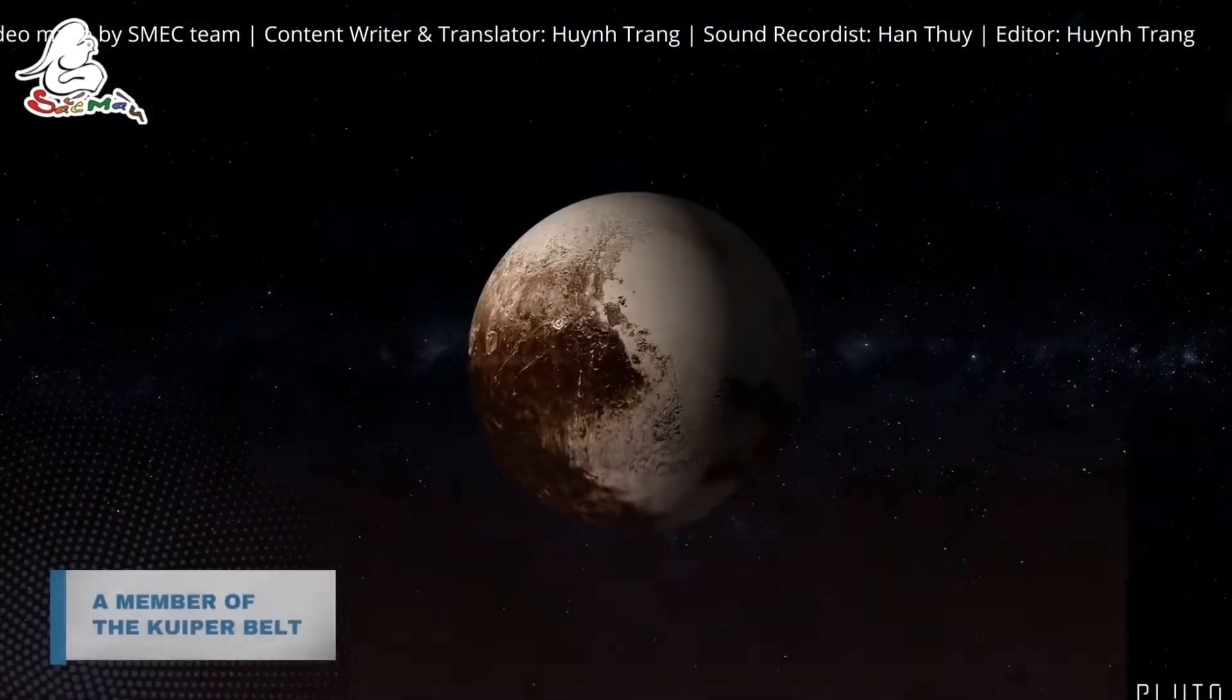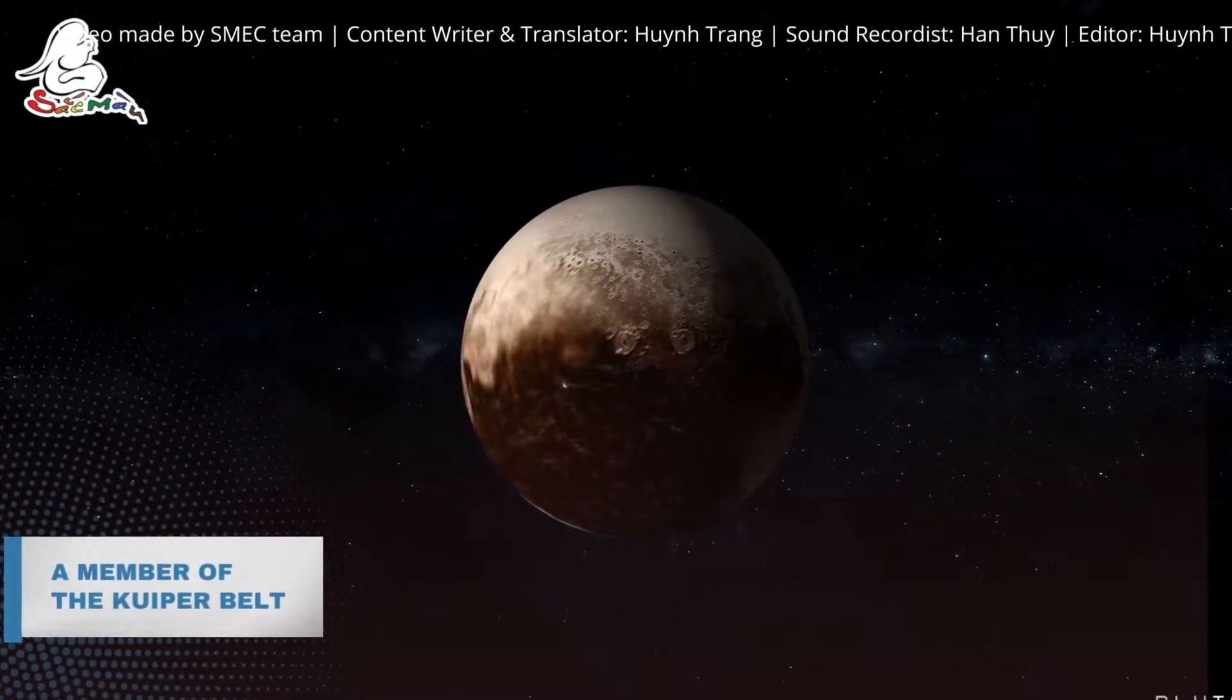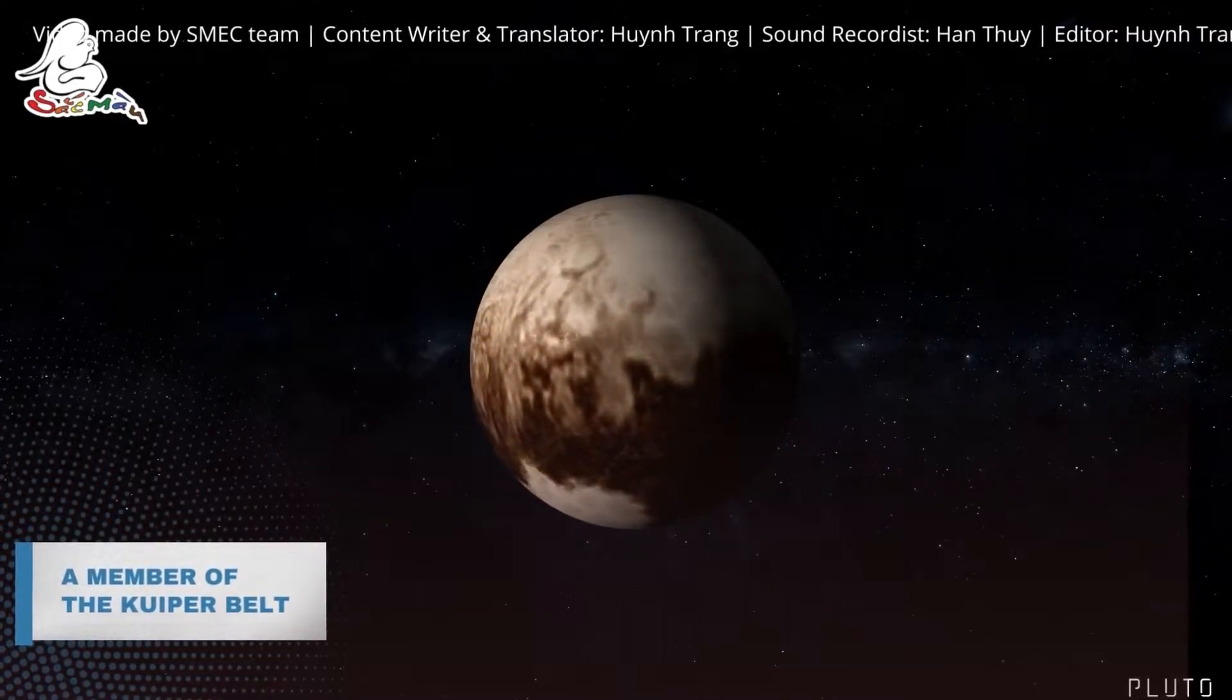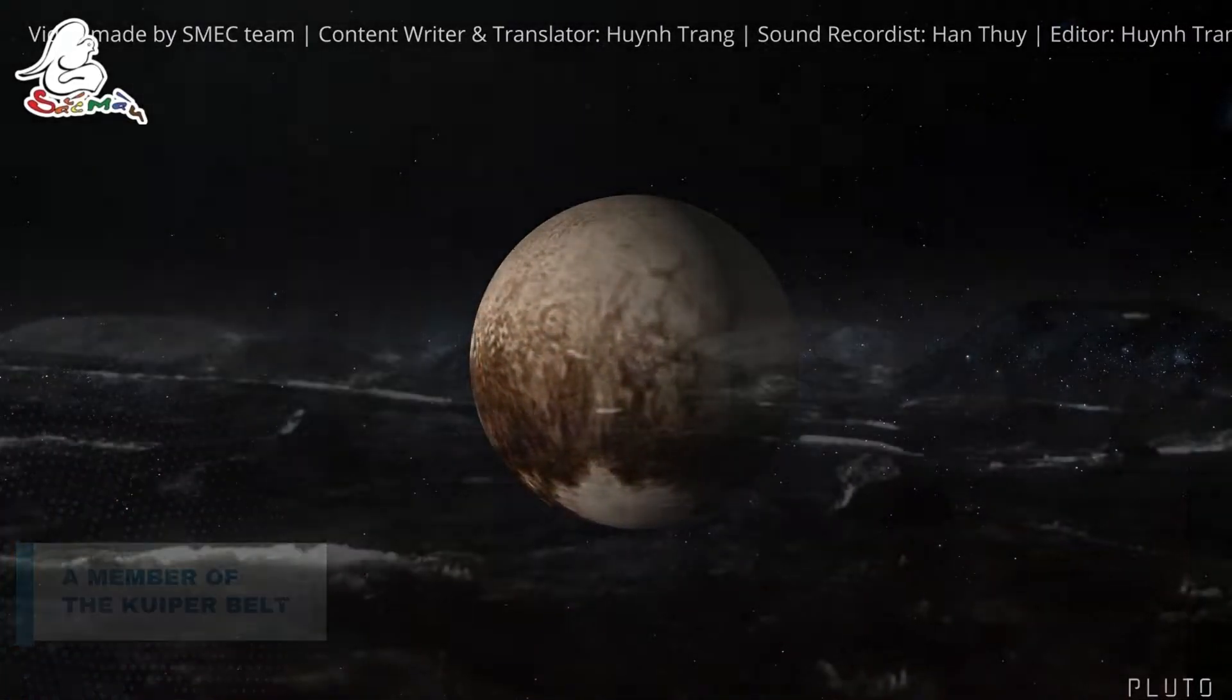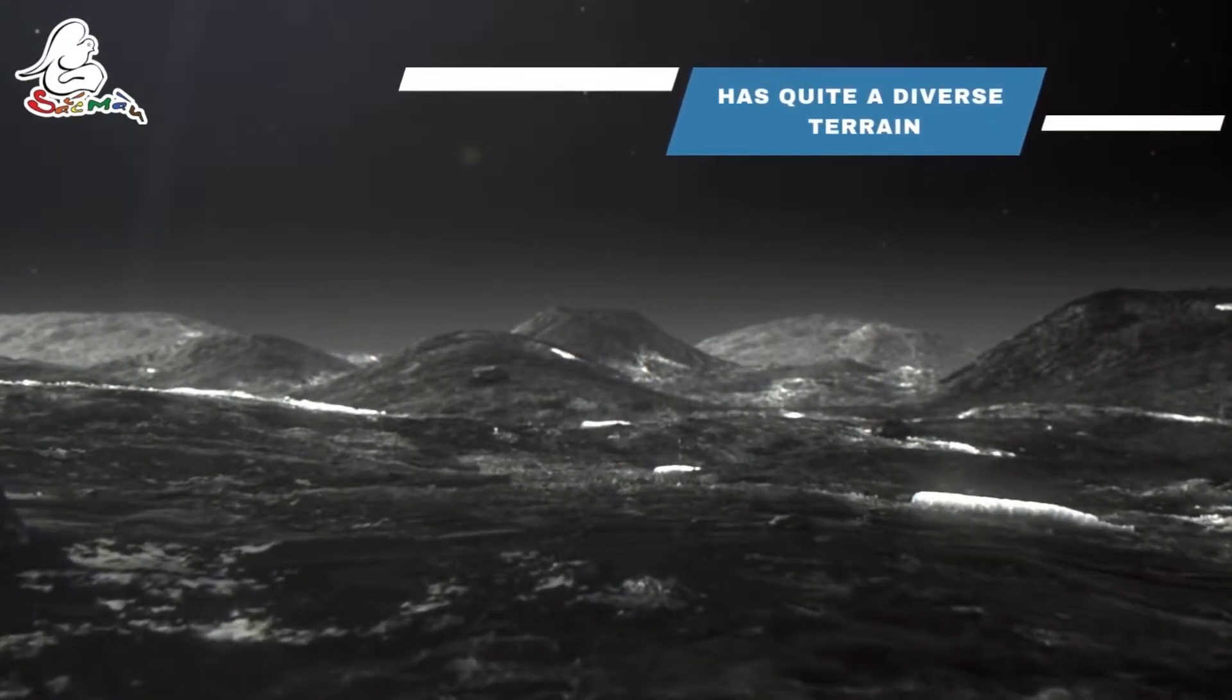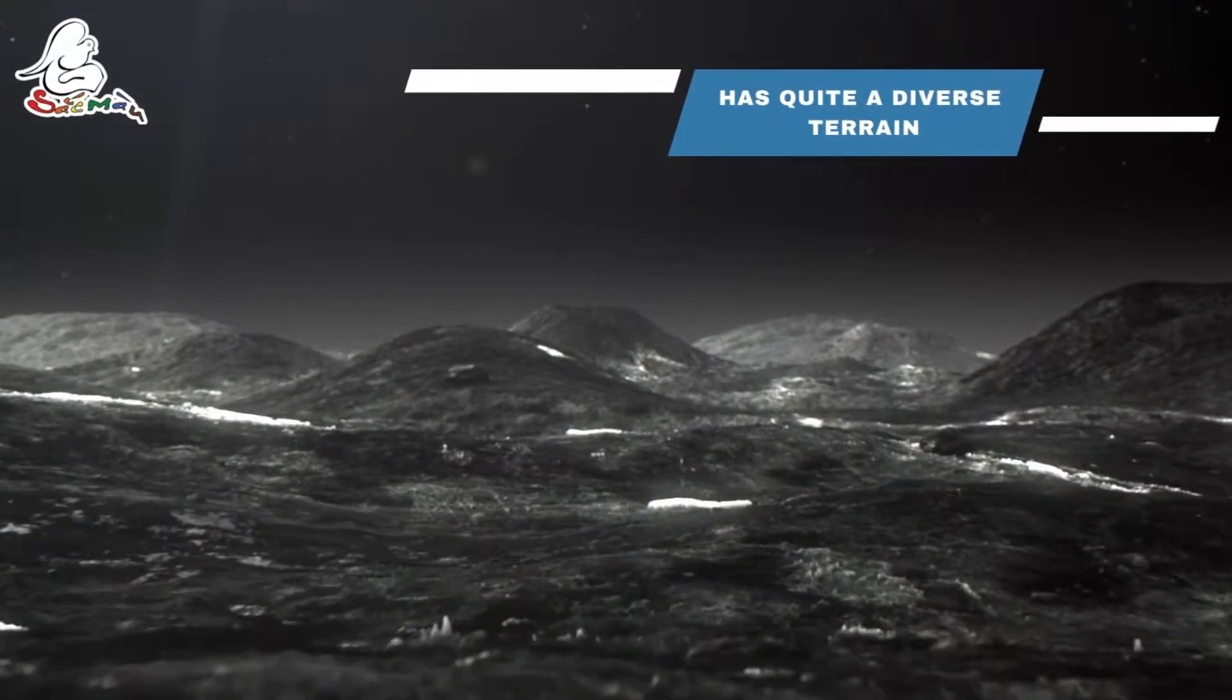Pluto is a member of the Kuiper Belt, a donut-shaped region of thousands of icy bodies beyond the orbit of Neptune. The dwarf planet has quite a diverse terrain. There are mountains, blaze, plants, and craters.